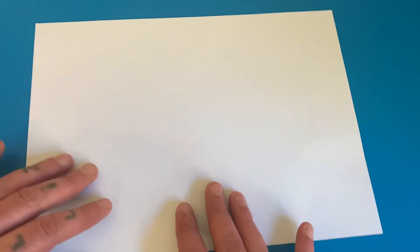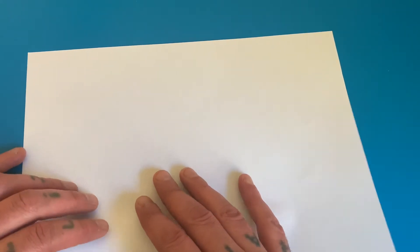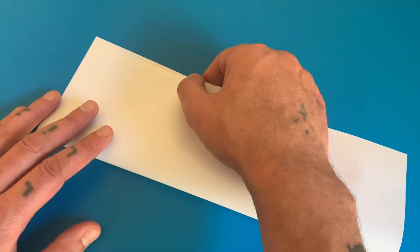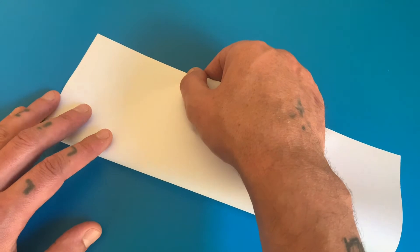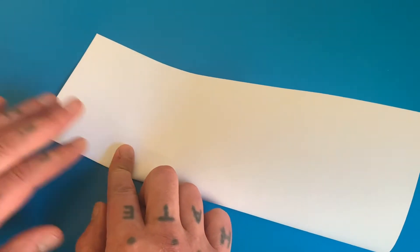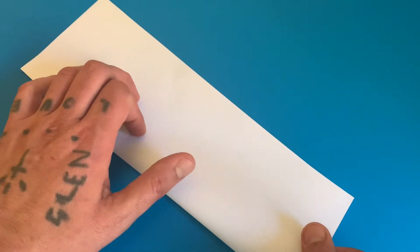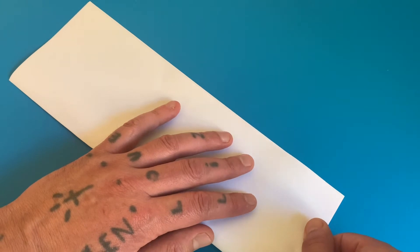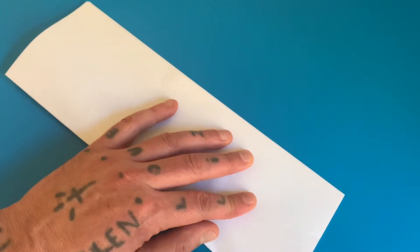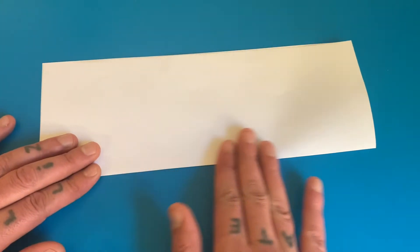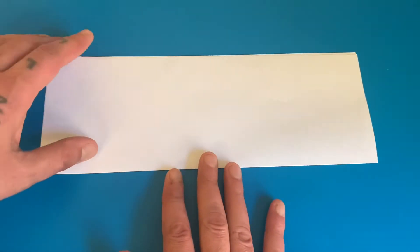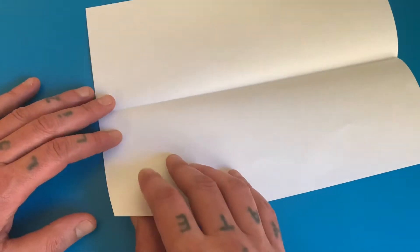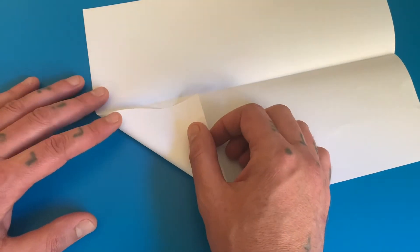First, you need a bit of A4 paper. We're going to fold it longways in half. Now the trick is to make sure everything is symmetrical. If you want the plane to fly straight, you've got to make sure all the edges are lined up straight. I'm going to take the bottom corner and fold it along